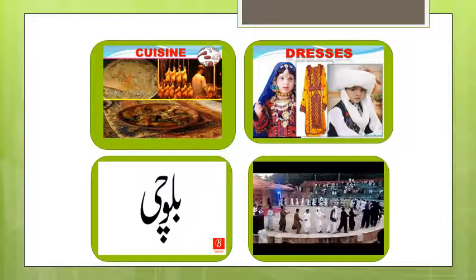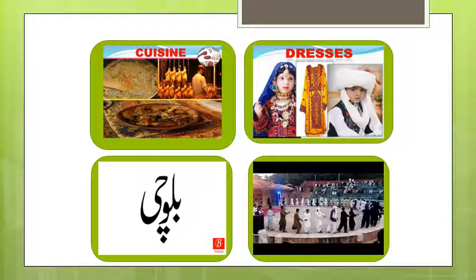People in Balochistan speak many languages including Balochi, Pashto, Brahvi, and Persian. Their traditional cuisine is Sajji. The traditional dances are Chaap, Lewa, and Jhumar. Horse racing is a traditional sport. The men wear loose kameez and baggy shalwars with turbans, while the women wear embroidered frog-type shirts, shalwars, and chadar.